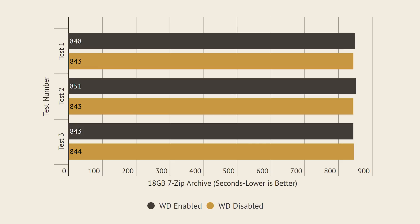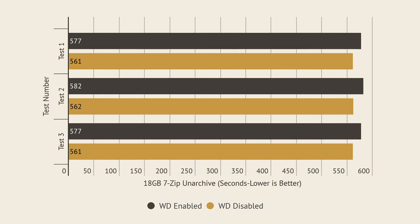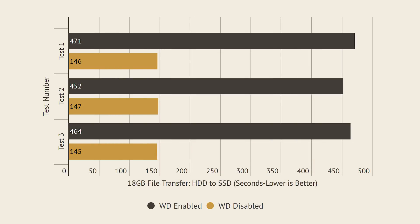Now let's go into file management. First, I archived an 18GB folder filled with documents, music, and videos using 7-Zip and saw less than a 1% performance increase, so nothing there. I then tried unarchiving the same folder, and there was a little over a 3% performance increase — still not much.